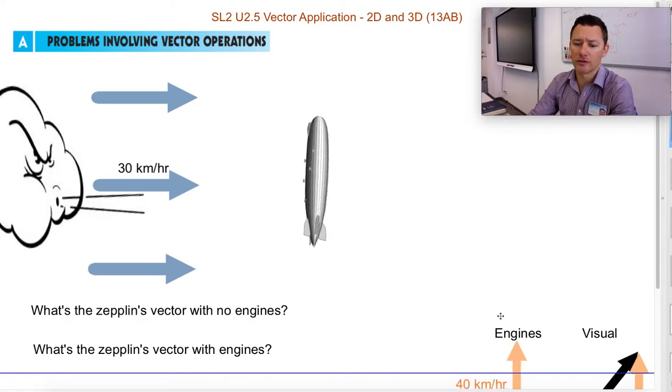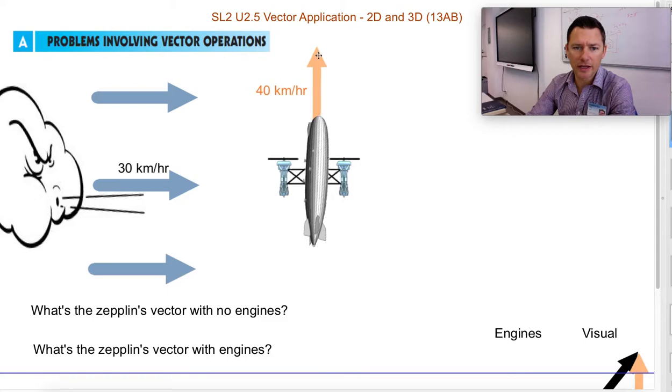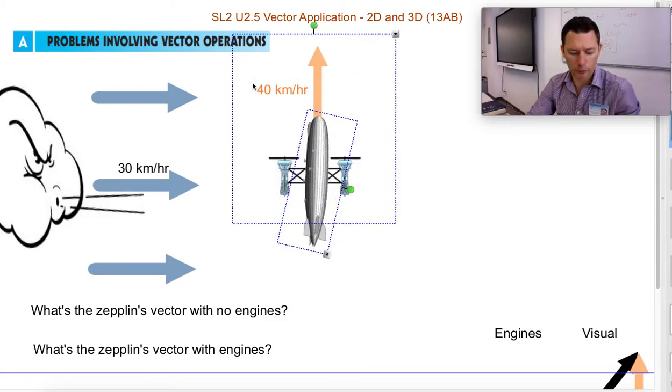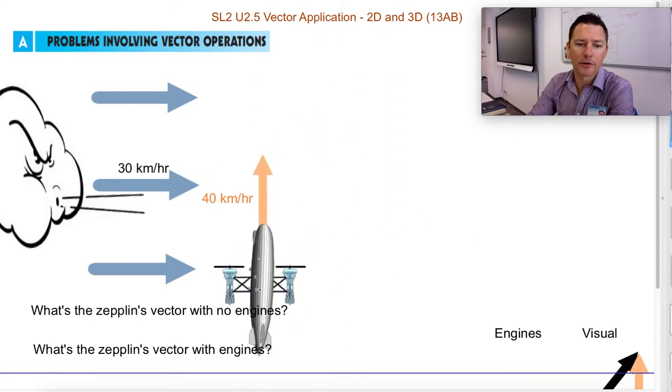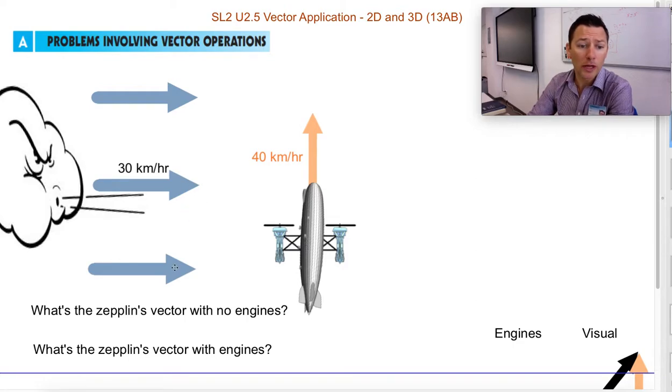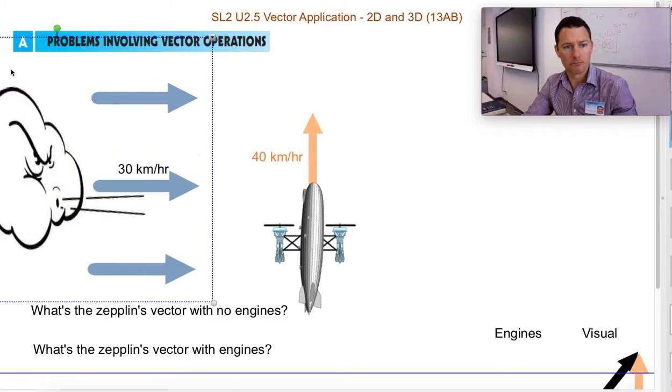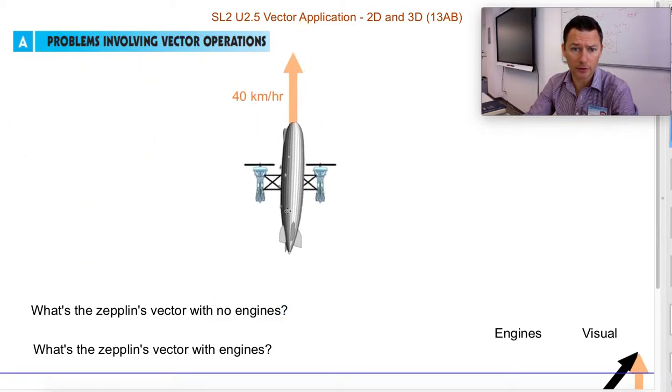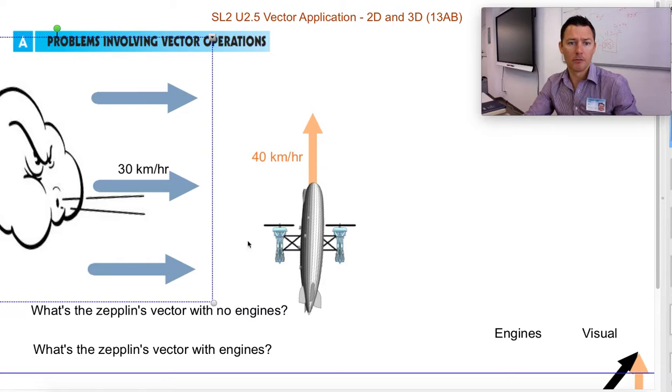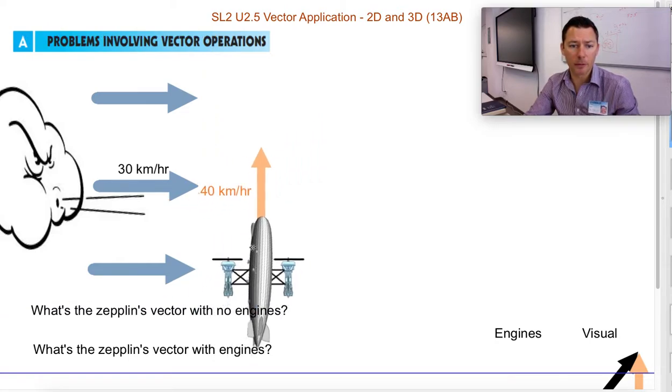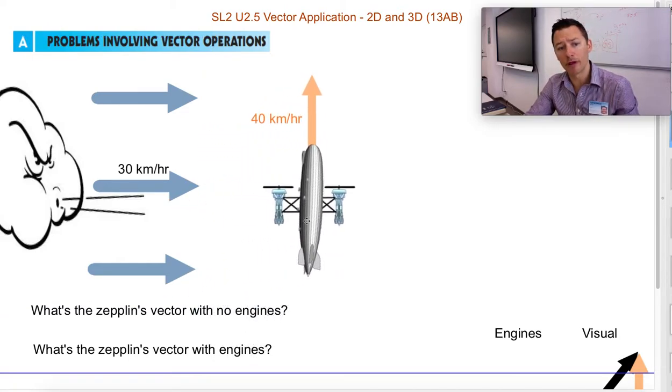So if you put some engines on it and now it has some forward momentum under its own power, if there's no wind, it'll just move straight under its own power. But if there's both, it'll move somewhat forward, but at the same time get blown by the wind.